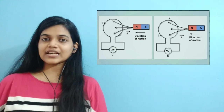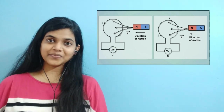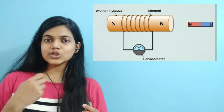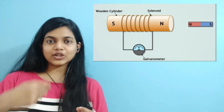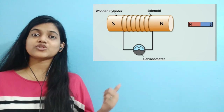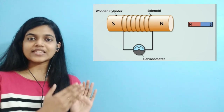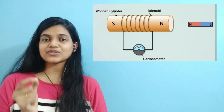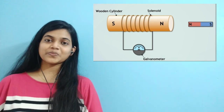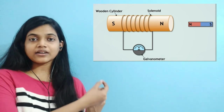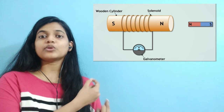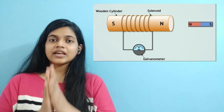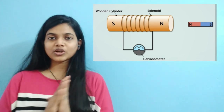This is a simple experiment. Let us take a wooden cylinder or a paper cylinder and take an insulated copper wire and wind it across it in the form of a solenoid as shown in the picture. The ends of the copper wire in the solenoid are connected to a galvanometer.